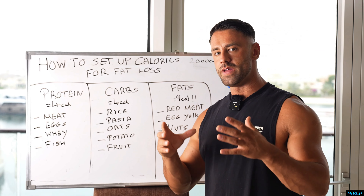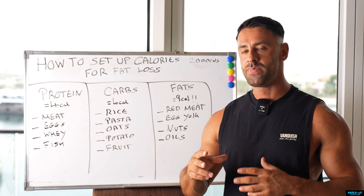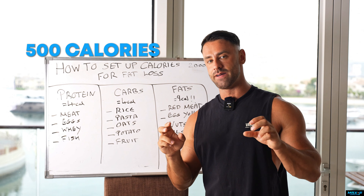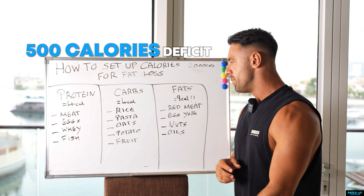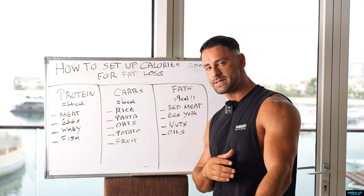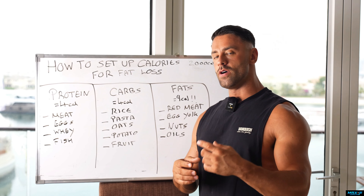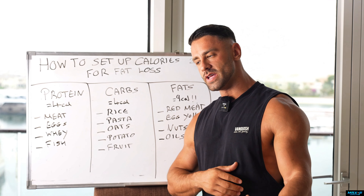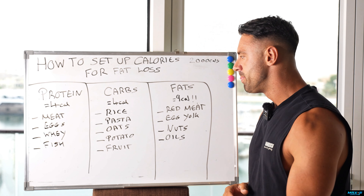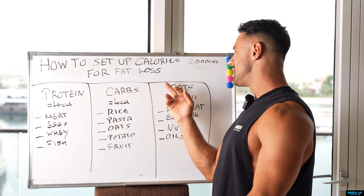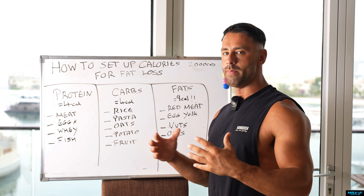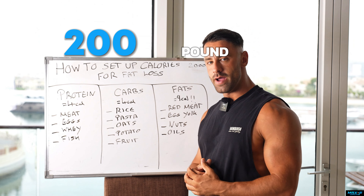Now, what people tend to do when they're trying to lose body fat — as you'll always hear — find your maintenance calories and then be in a 500-calorie deficit. You'll hear that a lot because a 500-calorie deficit across the week is 3,500 calories, and that is the equivalent of one pound of fat. It would give you two kilos of fat loss per month, which is a pretty good rate of change. In terms of how do we set them up for you, imagine you are a 200-pound male.